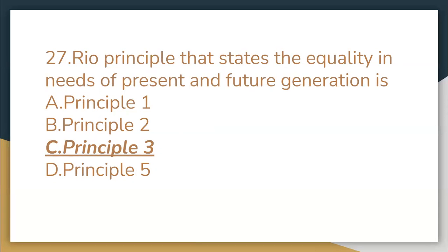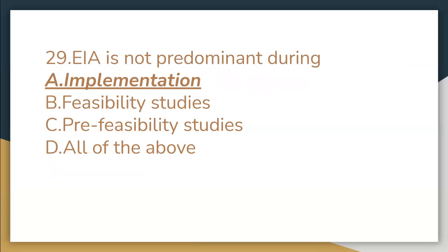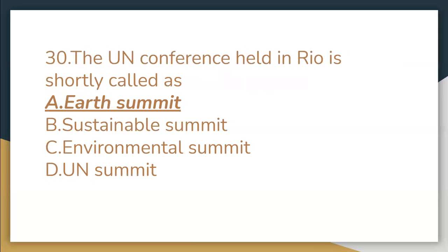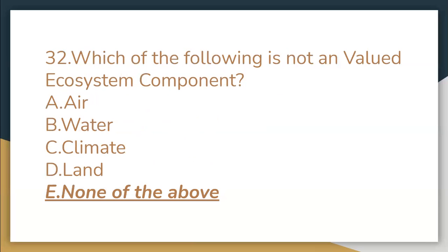The Rio principle that states equality in needs of present and future generations is Principle 3. The developmental activity that creates vibrations is roads and bridges. EAA is not predominant during implementation. The UN conference held in Rio is shortly called the Earth Summit. The consecutive proponent's responsibility for site restoration and compensation is part of the site remediation bond. Which of the following is not a valid ecosystem component? None of the above.